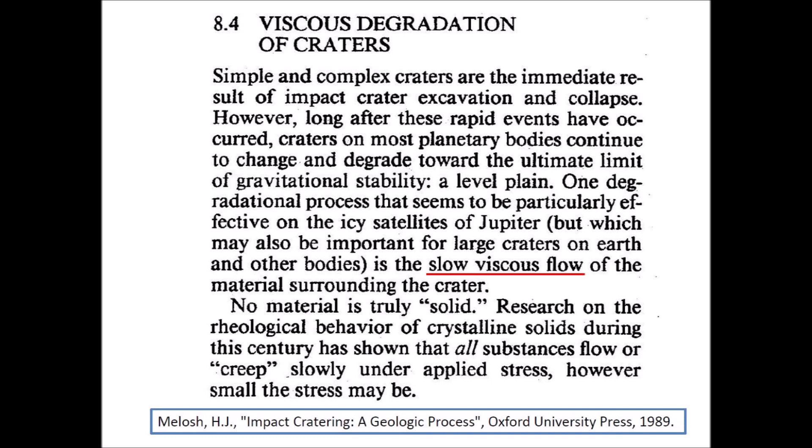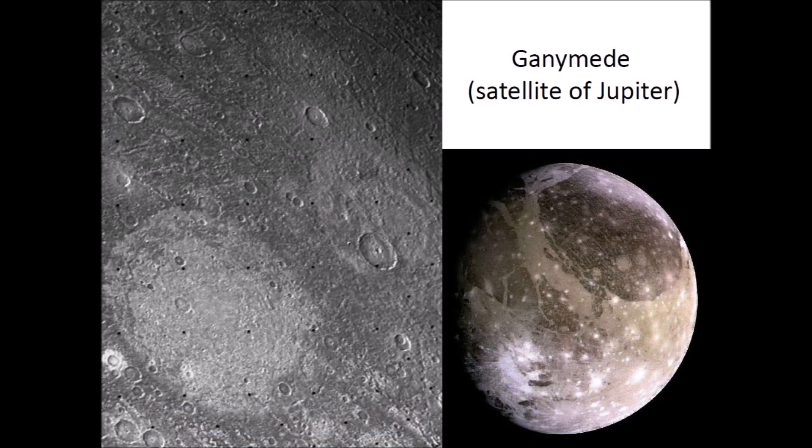No material is truly solid. Research on rheological behavior of crystalline solids has shown that all substances flow or creep slowly under applied stress, however small that stress may be. Some of the craters in Ganymede show evidence of extensive viscous flow. There are craters that lack a central crater depression and a rim, discernible only from the contrasting colors of the surface material.